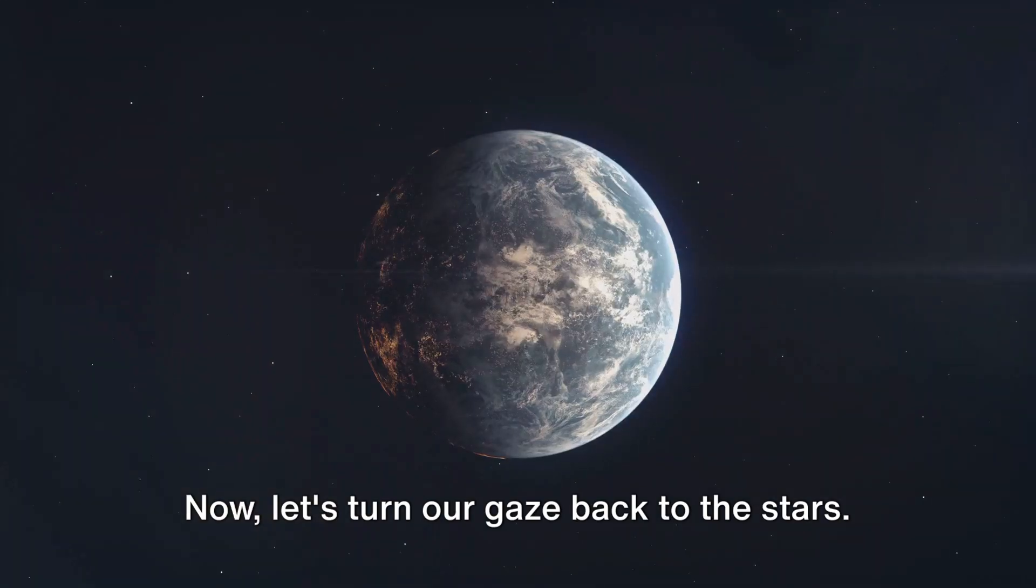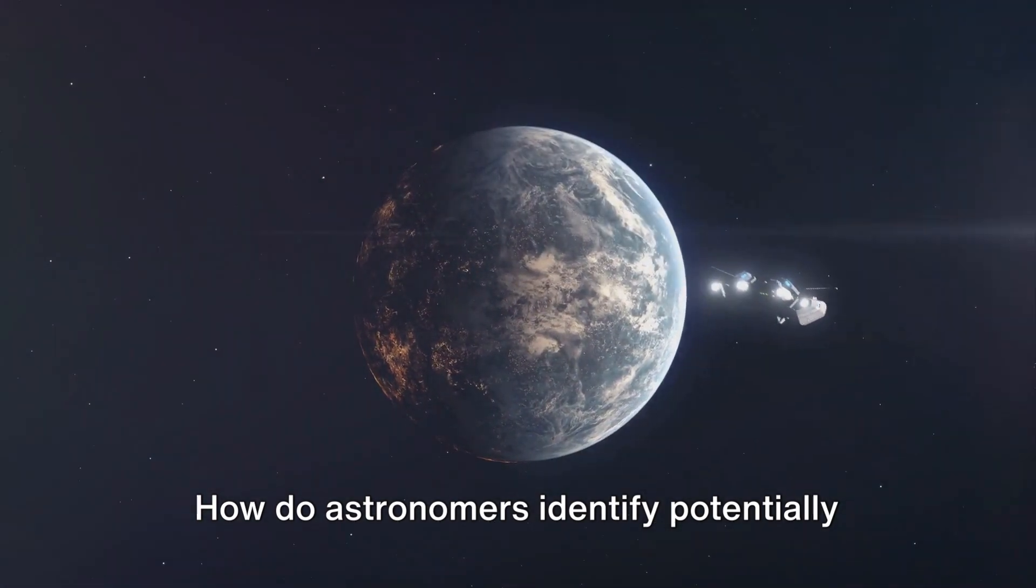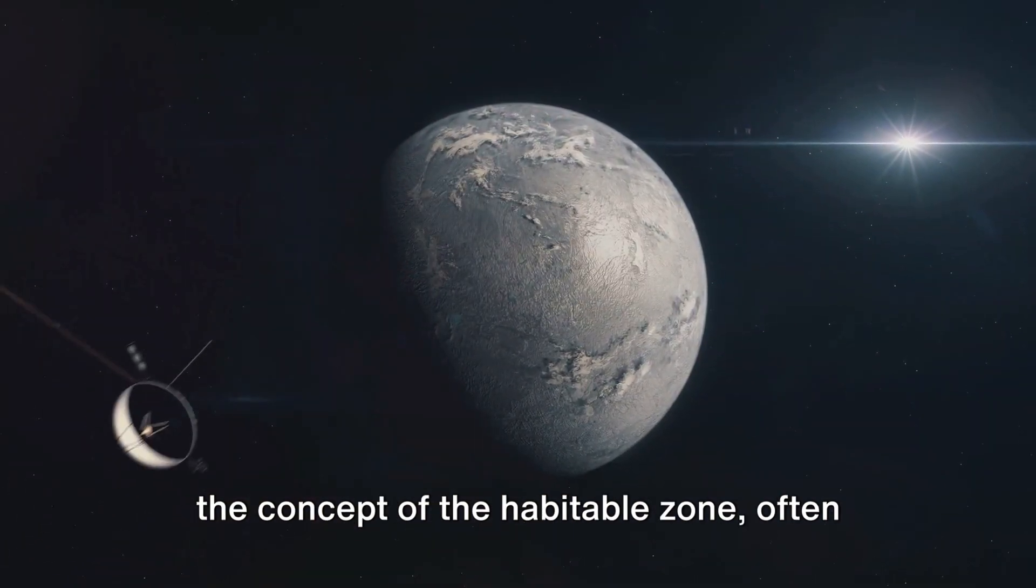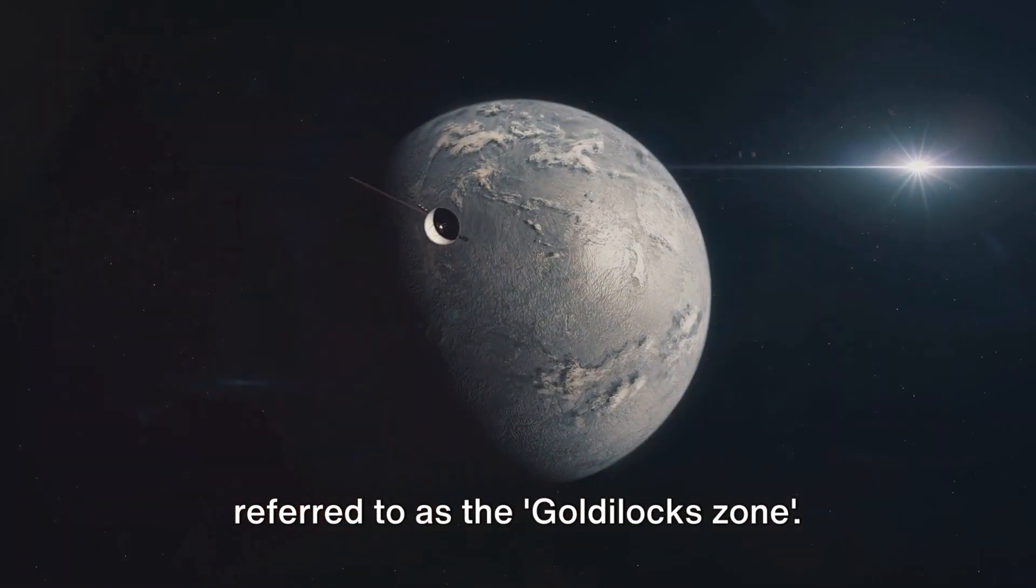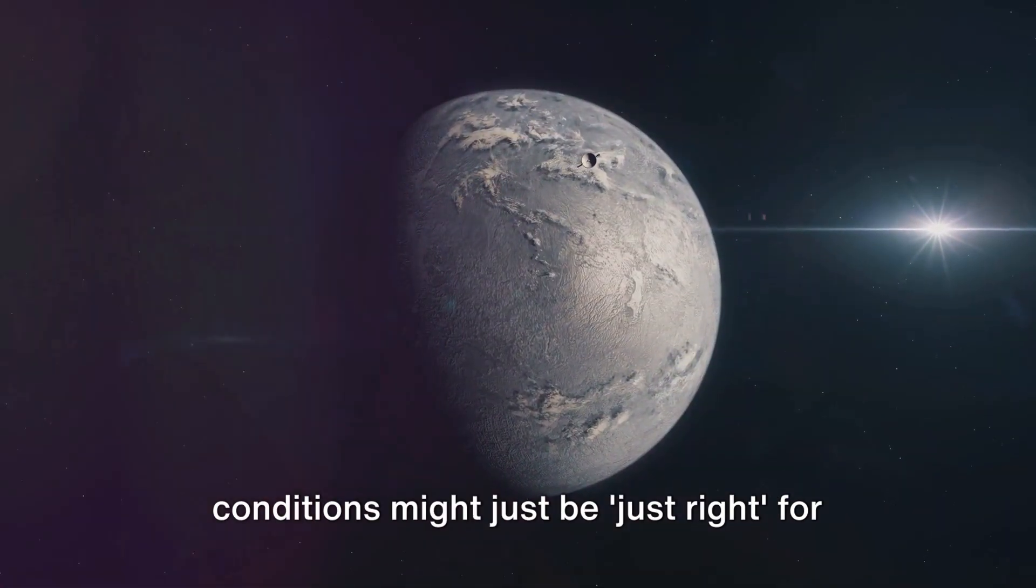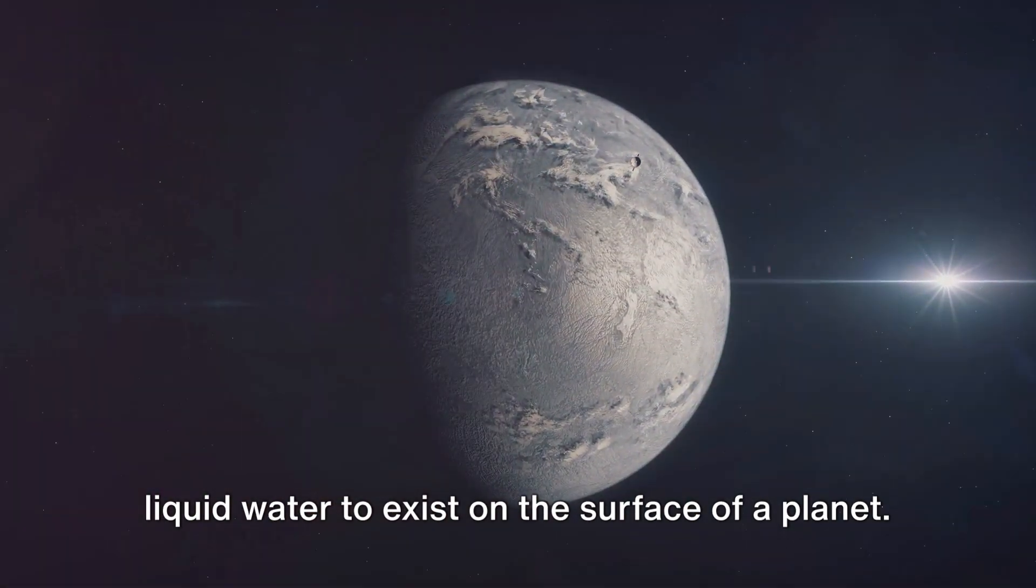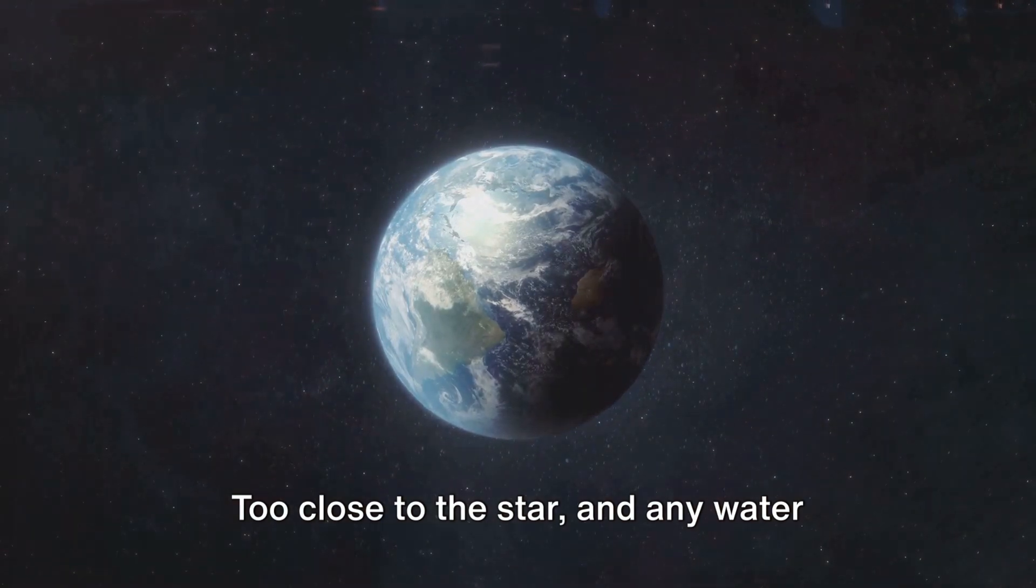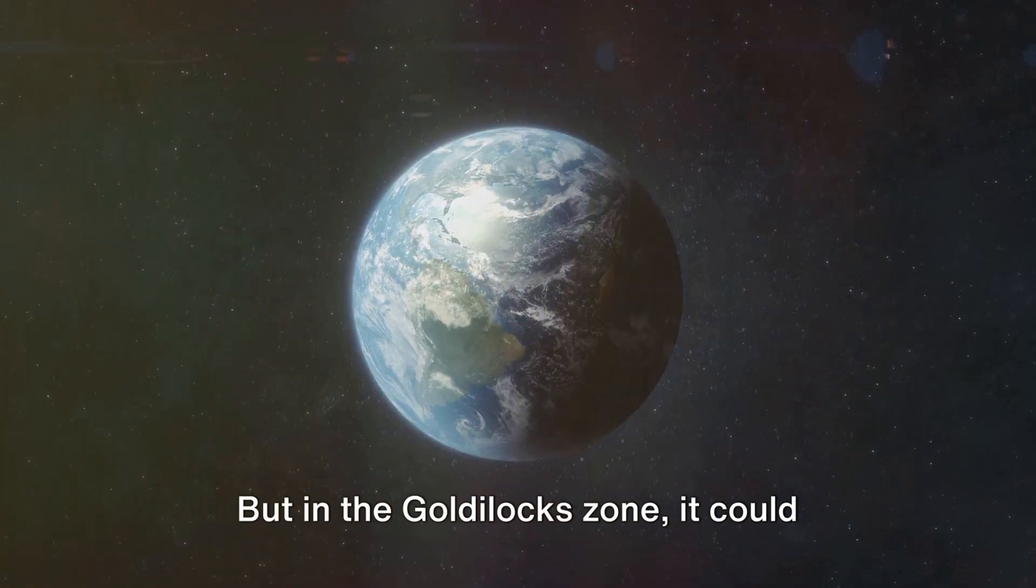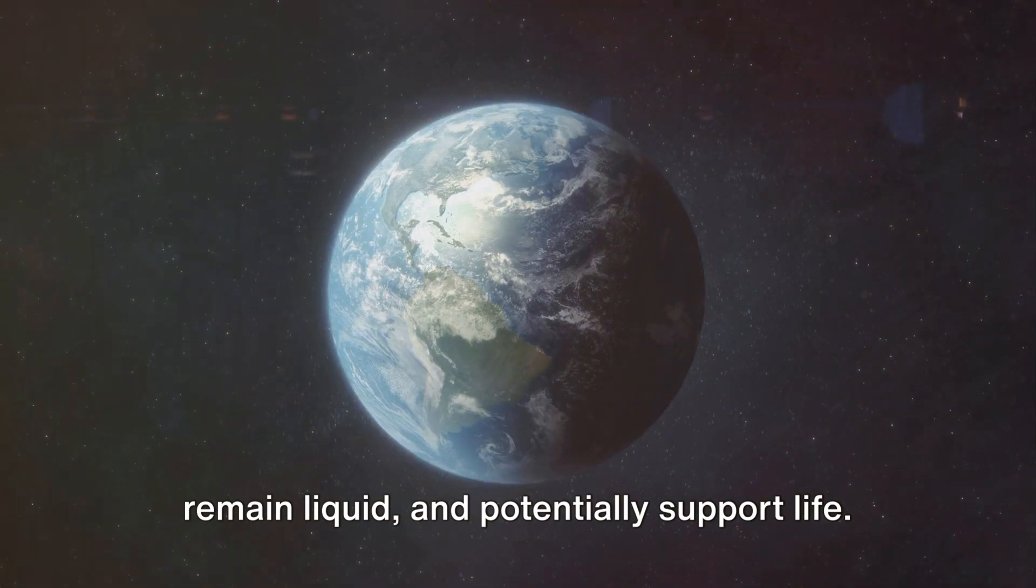Now, let's turn our gaze back to the stars. How do astronomers identify potentially habitable exoplanets? The answer lies in the concept of the habitable zone, often referred to as the Goldilocks zone. This is the area around a star where conditions might just be just right for liquid water to exist on the surface of a planet. Too close to the star, and any water would evaporate. Too far away, and it would freeze. But in the Goldilocks zone, it could remain liquid and potentially support life.